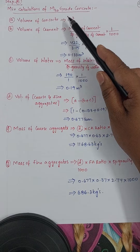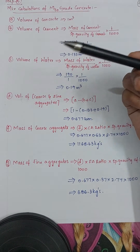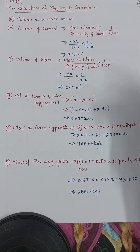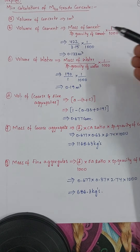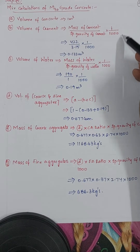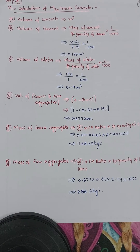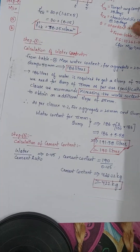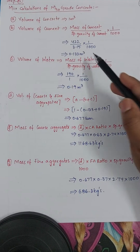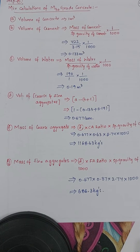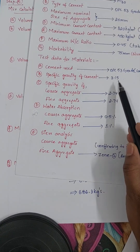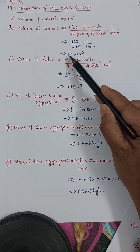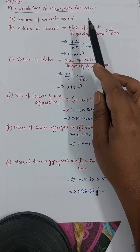Mix calculation for M30 grade concrete per 1 cubic meter. Volume of cement = mass of cement / (specific gravity of cement × 1000) = 422 / (3.15 × 1000) = 0.133 m³. Volume of water = mass of water / (specific gravity of water × 1000) = 190 / (1 × 1000) = 0.19 m³.